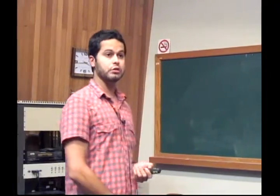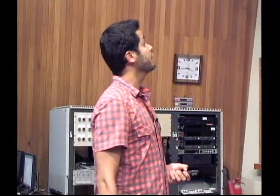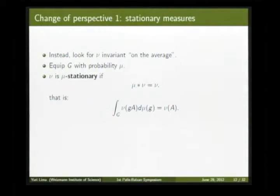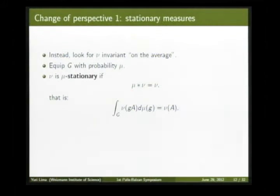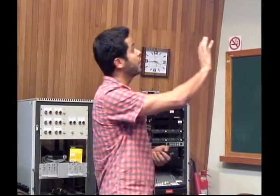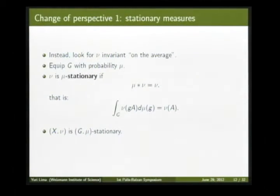On this setup, we can say what a stationary measure is: ν is μ-stationary if the convolution of the probability measure on the group and the probability measure on the space equals the probability measure on the space. By 'invariant on average' I mean that for every set A, when you consider ν of the action of elements of the group on A and average under μ, you recover the initial measure. I'm going to denote this as the space being (G, μ)-stationary.